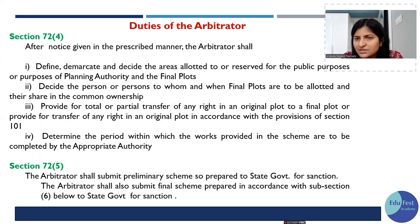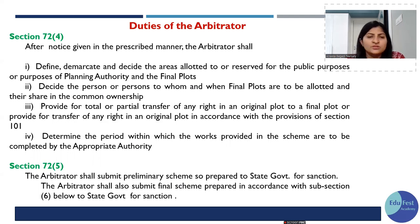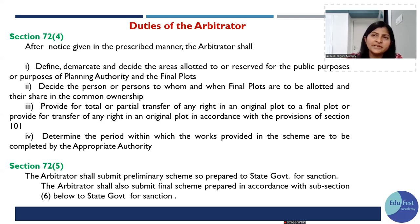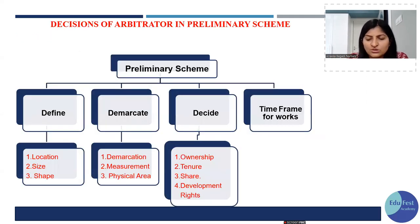The preliminary scheme is compulsory — whatever is decided in it cannot be challenged before the arbitrator again. The arbitrator decides: the demarcation of public purpose areas, allotment of final plots, total or partial transfer of rights from original plot to final plot, and under Section 72(5), the appropriate authority (e.g., PWD for roads) is given a time period by the arbitrator to complete the works provided in the scheme. Under Section 72(5), the arbitrator submits the preliminary scheme to the state government for sanctioning.